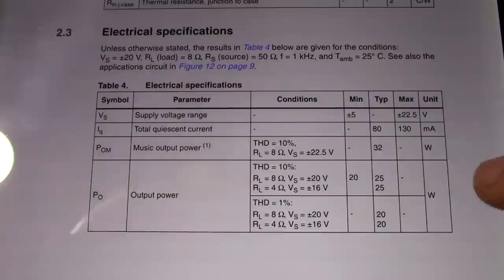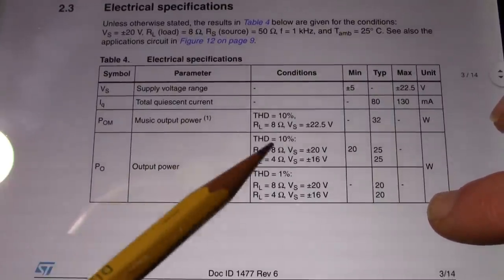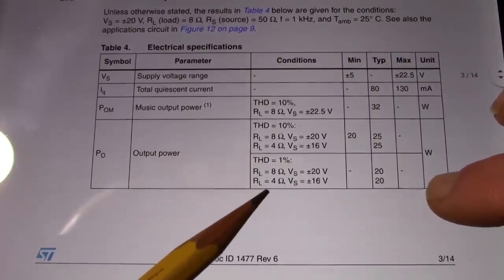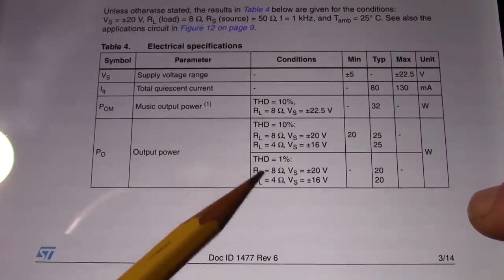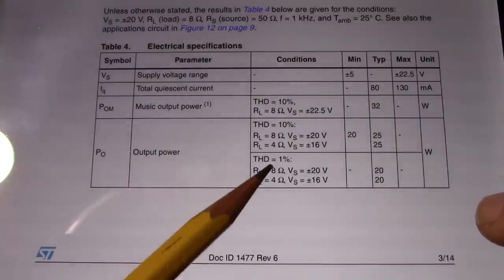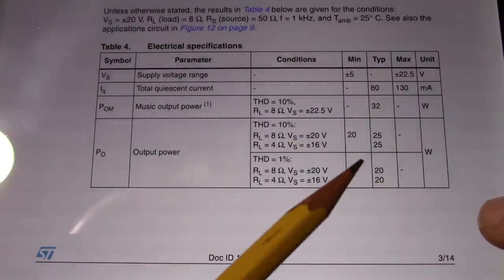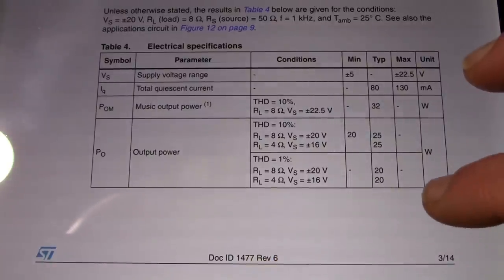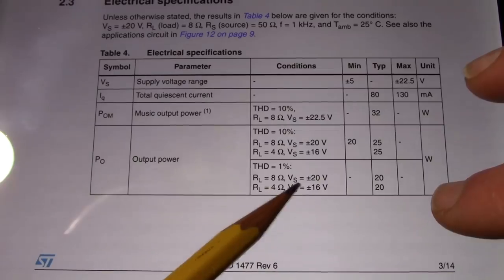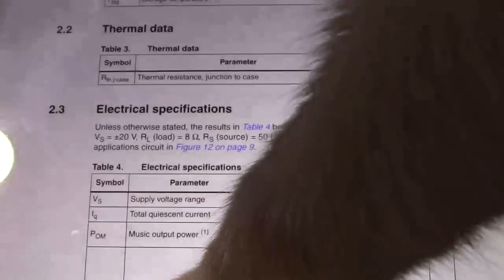More electrical specifications. They tell you the power at different distortion levels. You see here at 1% at different supply voltages and different load impedances. You should be able to get a decent power. But again, I'm going to check it without any Snickers.